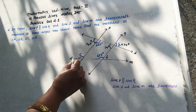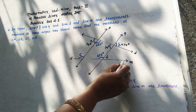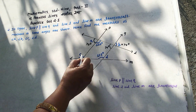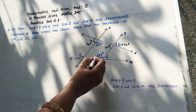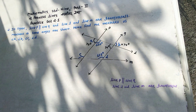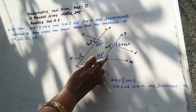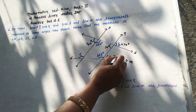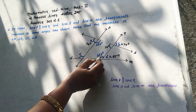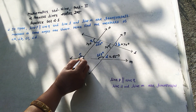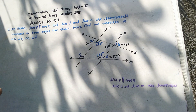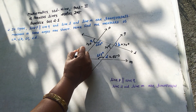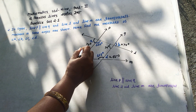Now, taking the second transversal, the two angles formed are in a linear pair, so their sum equals 180 degrees. Therefore, angle D equals 180 minus 150, which means 65 degrees. These are corresponding angles, and corresponding angles are congruent. Therefore, angle C equals 150 degrees.